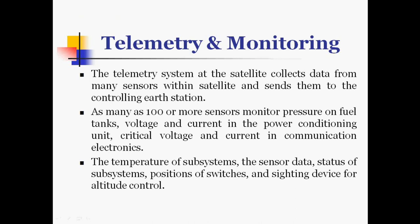Now we will look at each component of telemetry tracking command and monitoring. The first section is telemetry and monitoring. The telemetry system at the satellite collects data from many sensors within the satellite and sends them to the controlling earth station. As many as 100 or more sensors monitor pressure on the fuel tanks, voltages and currents in the power conditioning unit, critical voltages and currents in communication electronics, temperature of subsystems, sensor data, status of subsystems, position of switches, and sighting devices used for attitude control.